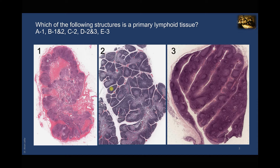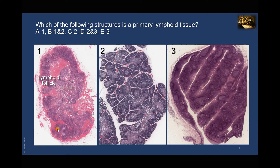A secondary lymphatic organ, on the other hand, is the site where most immune responses occur. Secondary lymphatic organs can be encapsulated, like lymph nodes, one of which is shown here in image one. Look at the capsule of dense irregular connective tissue, the bean shape of the lymph node, the presence of a cortex and a medulla, and above all, the presence of lymphatic nodules in the cortex. So image one is a lymph node — a secondary lymphatic organ where lymphocytes multiply but have already reached maturity.